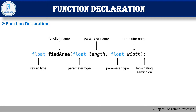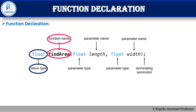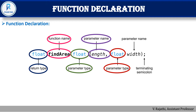Here is how to declare a function. Float is the return type, and find_area is the function name — you can give any name. Inside the parentheses we have the parameters: the first parameter type is float with name length, and the second parameter type is float with name width. Finally, it ends with a semicolon. This is the proper way of declaring a function.